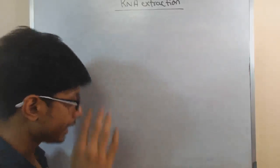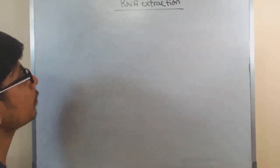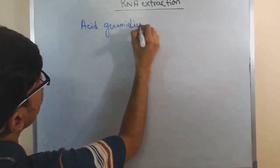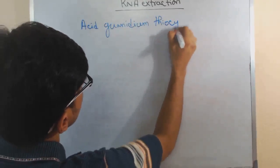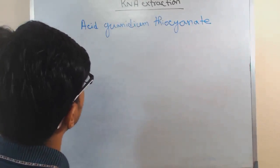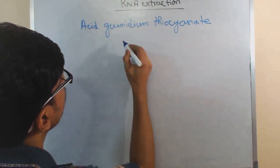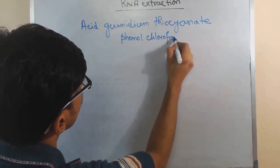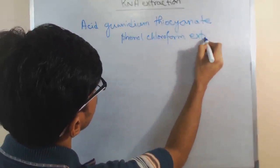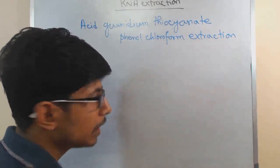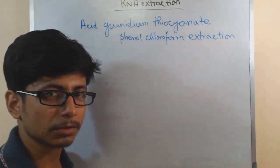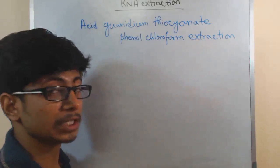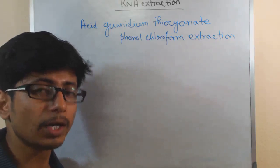Let us look at the process for RNA extraction. We are looking at the process called acid guanidium thiocyanate phenol chloroform extraction. This is the chemical name of this process, and if you know this name, you will know the process also, because everything is inside the name. Acid guanidium thiocyanate phenol chloroform extraction — that is the extraction process of RNA.